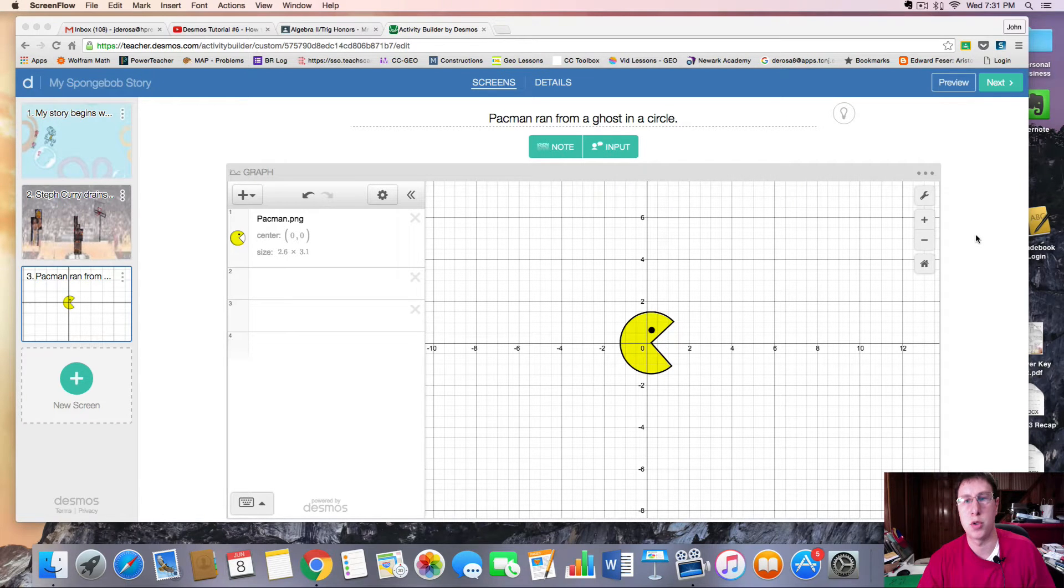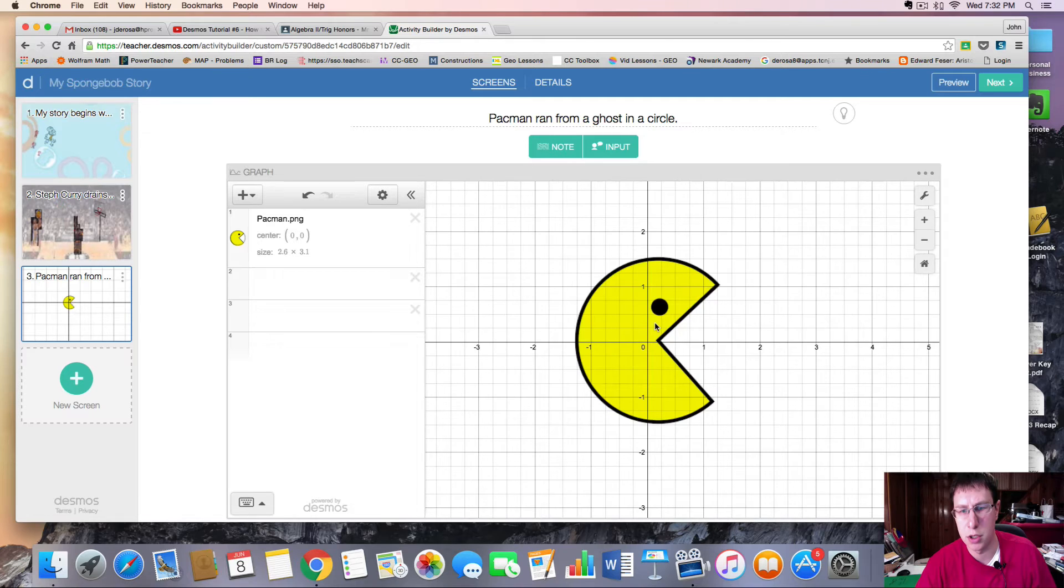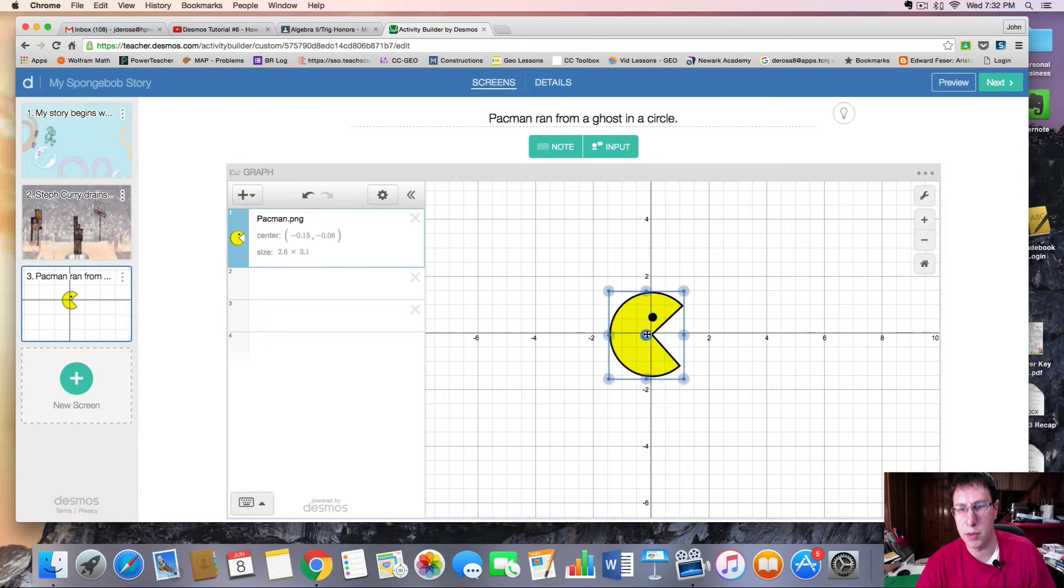Alright folks, welcome to this next Desmos video tutorial on how to create circular motion. I'm going to take this from scratch. We have Pac-Man here at the origin. Assuming you've uploaded this image, we now want to be able to make it move in a circular motion.